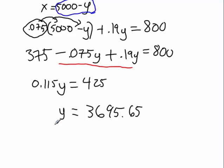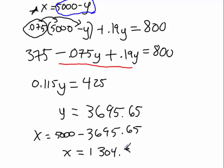Okay, plugging that back in, I get, I'm going to plug that into this equation right here. X equals, so I get X equals 5,000 minus 3695.65. And so, now X equals 1304.35.